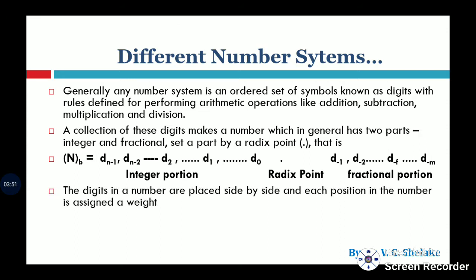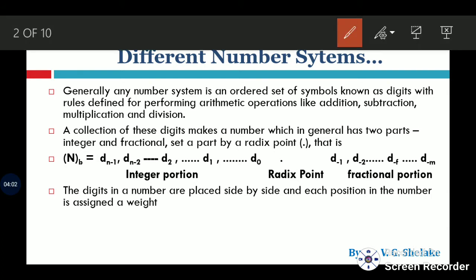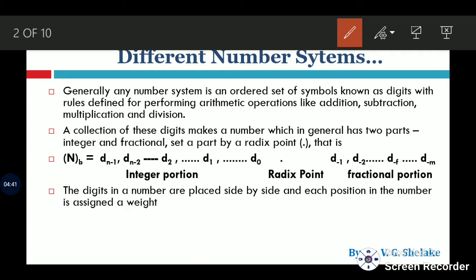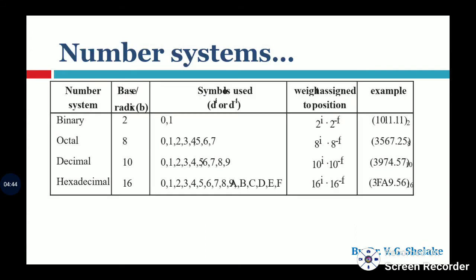The digits in a number are placed side by side, and each position in the number is assigned a weight. For example, if the same symbol 2 appears in different positions in a decimal number, the weight depends on its position: the rightmost position has weight 10 raised to 0, next is 10 raised to 1, then 10 raised to 2, and so on. For the fraction part, the weights are 10 raised to minus 1, minus 2, etc.